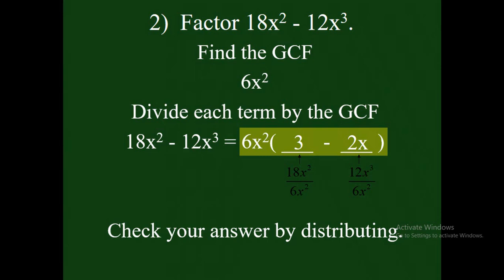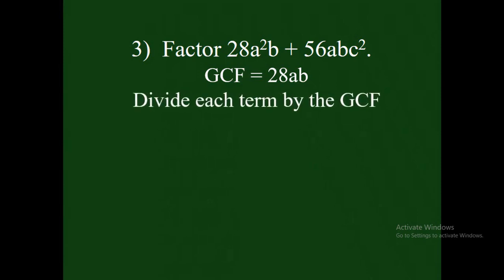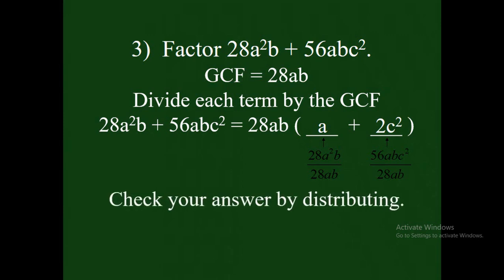Check your answer by distributing 6x squared. Let us have another example: factor 28a squared b plus 56abc squared. The GCF of these two terms is 28ab. The next thing to do is divide each term by the GCF: 28a squared b divided by 28ab, plus 56abc squared divided by 28ab. So our final answer is 28ab times the quantity a plus 2c squared. You can check your answer by distributing.